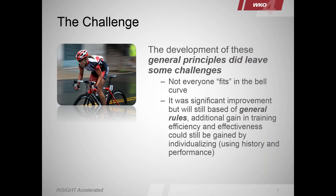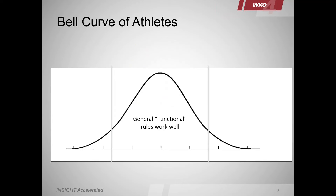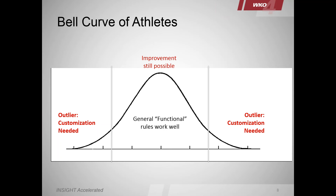All of the rules we see today are customized and personalized, but they still have at their core this general principle. The challenge is: not everybody fits in that bell curve. Whereas this is a significant improvement in training, it wasn't the most optimal — there was still something to be gained. We still had the ability to gain additional training effectiveness and efficiency by individualizing. When we look at a bell curve of athletes, you have outliers — you might have heard the term 'normalized power buster.' Ironmen tend to be outliers as well.